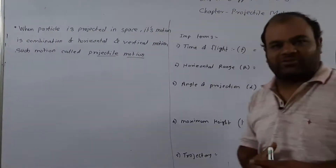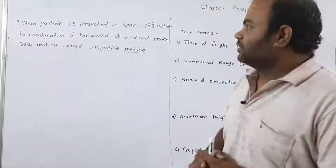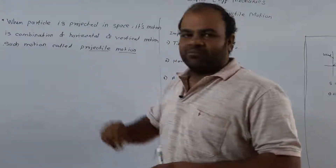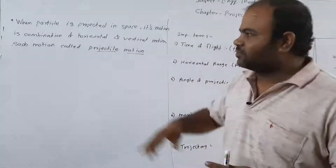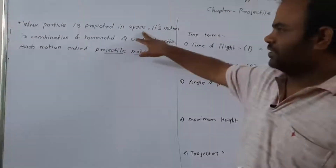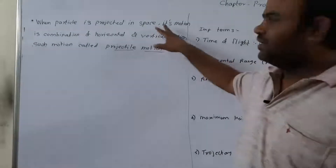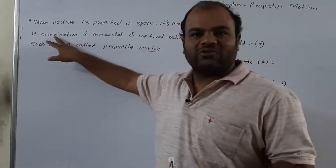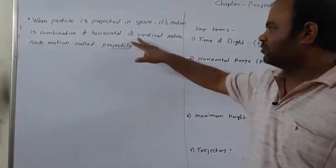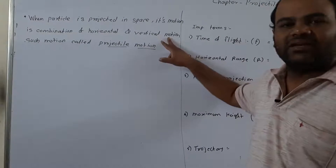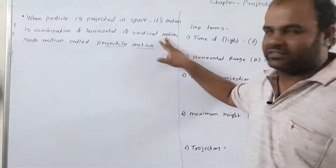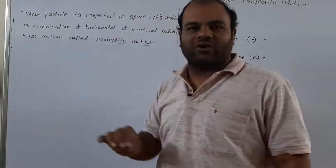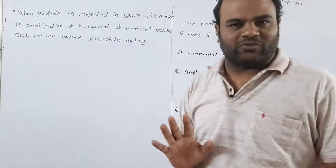What is projectile motion? When a projectile is projected in space, its motion is a combination of horizontal and vertical motion — that is, a rectangular coordinate system. Such a motion is called projectile motion.